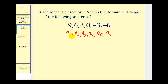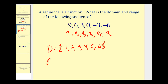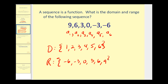The values of n represent the domain, so the domain of this sequence will be one, two, three, four, five, and six. The range of the sequence would be the actual elements in the list. We usually list these from least to greatest, so the range is negative six, negative three, zero, three, six, and nine.